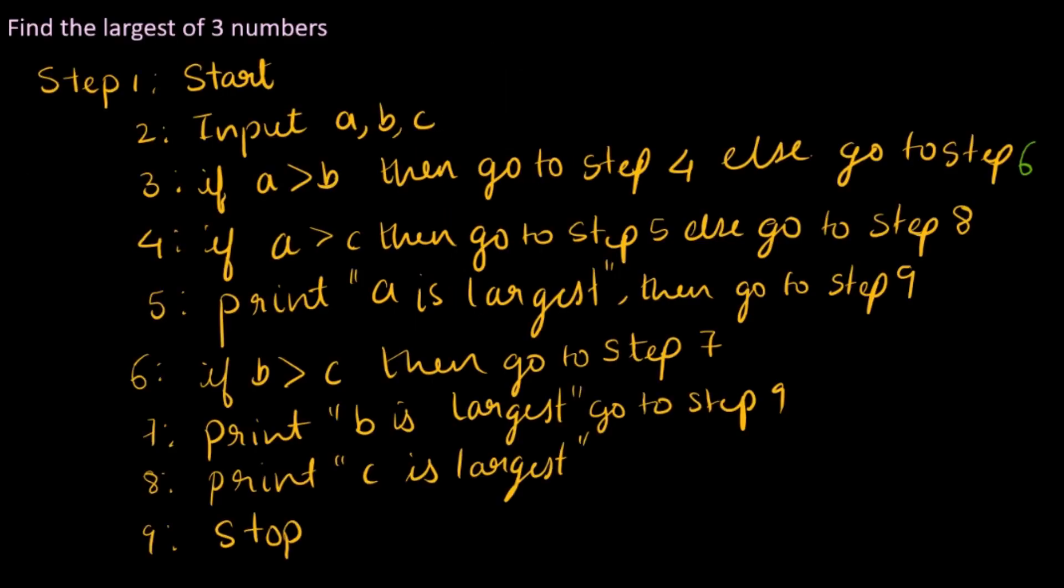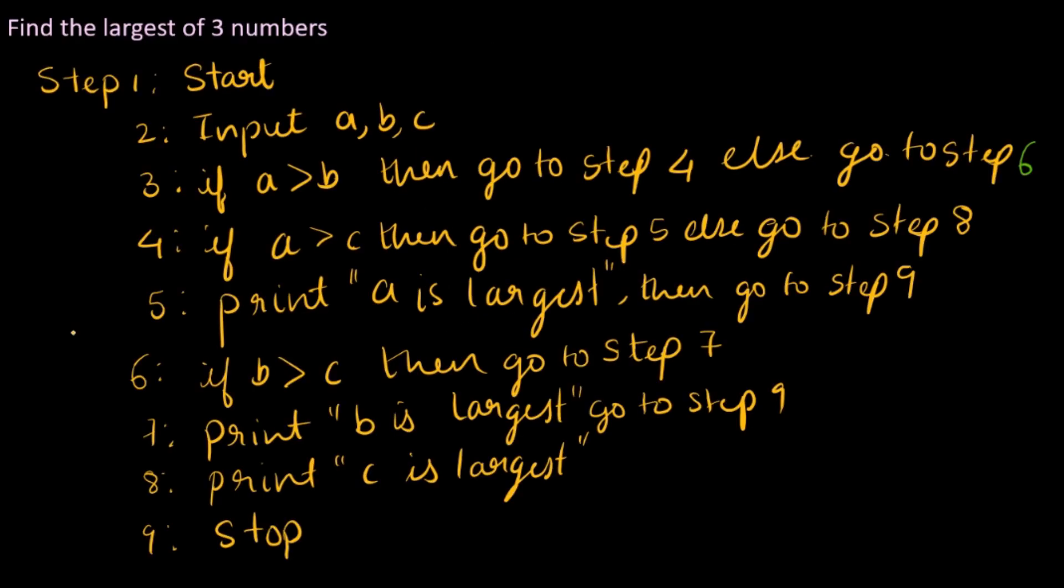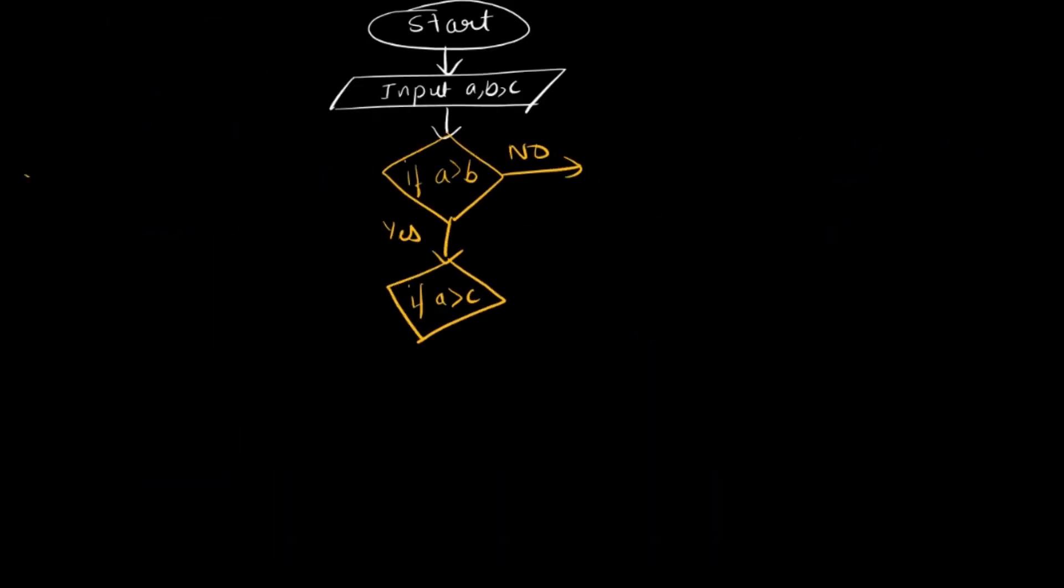Now let me write the no statement too. No means, what did it tell us to do? Else go to step 6. So for now, let's just leave this no part idle. We'll just solve the first yes, yes part, and then we'll come back to no. That's always a good way to write a flowchart. So after this step, then go to step 5, which is to print that A is largest. If this is yes, then you can print "A is largest", or print A, basically. So we're done with the first case.